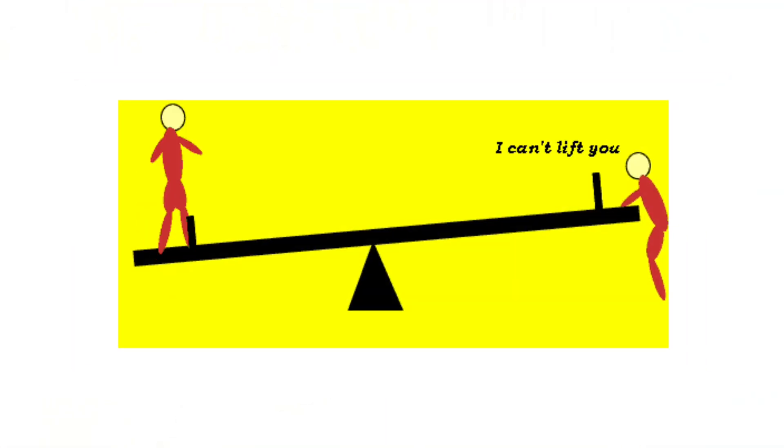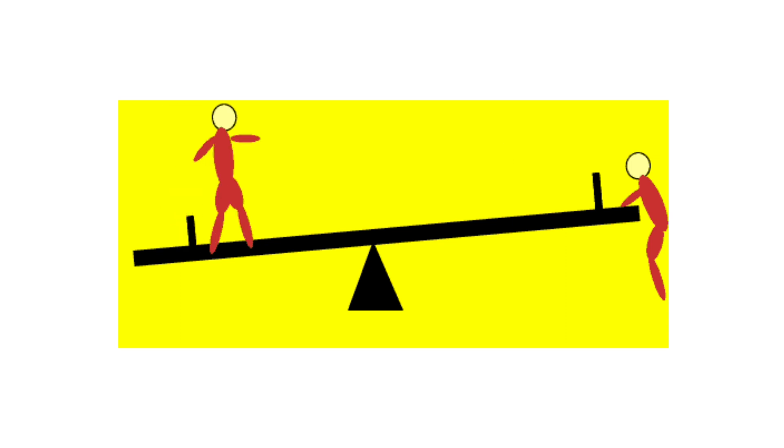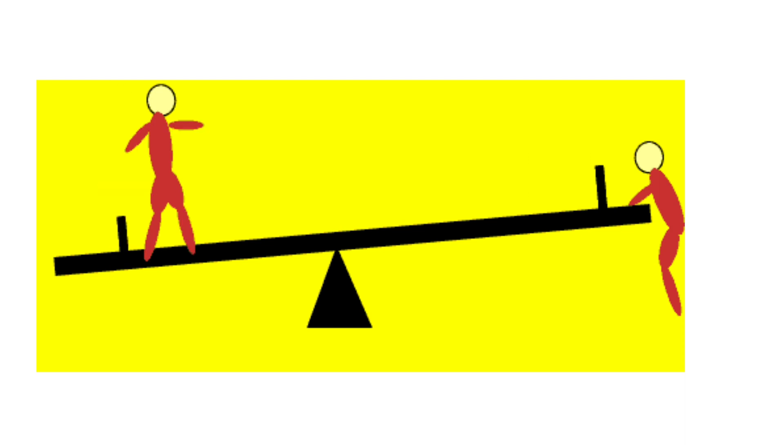The turning effect can act in two directions: clockwise or anti-clockwise. If you hold a scale and push one end down to the right, that produces a clockwise moment; pushing to the left produces an anti-clockwise moment. When two moments act on opposite sides of a pivot, we can calculate whether they are balanced. One is the anti-clockwise moment and the other is the clockwise moment.